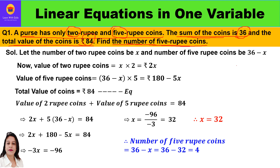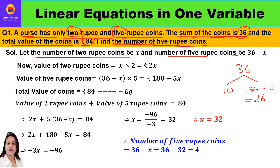Suppose I say I have total 36 coins, out of that 10 are 2-rupee coins, so 36 minus 10 is 26 — those are 5-rupee coins. In the same way, if I say let the number of 2-rupee coins be x, then the number of 5-rupee coins will be 36 minus x.